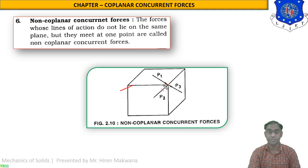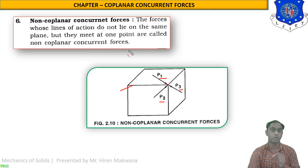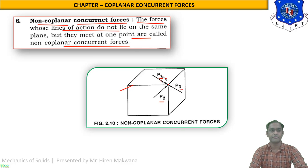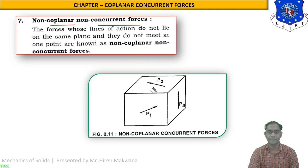Number six: here there is a cube, and at one corner three forces P1, P2, and P3 come from three different planes. They are concurrent at the corner of the block but not in the same plane, so they are known as non-co-planar concurrent forces. The forces whose lines of action do not lie on the same plane but meet at one point are called non-co-planar concurrent forces.